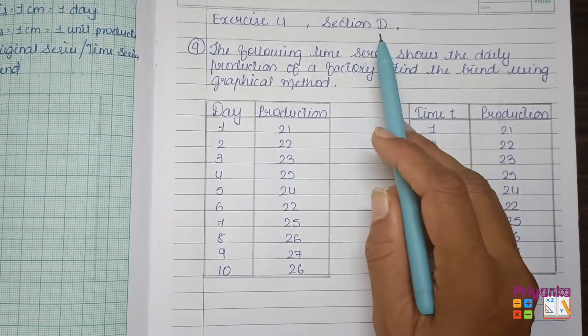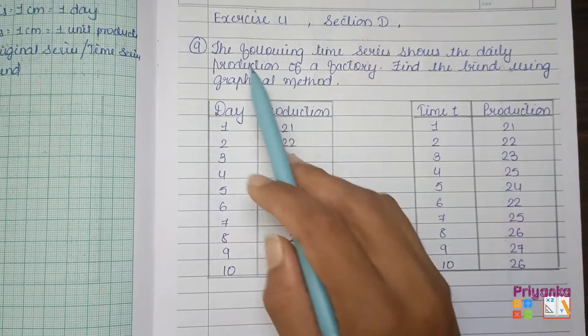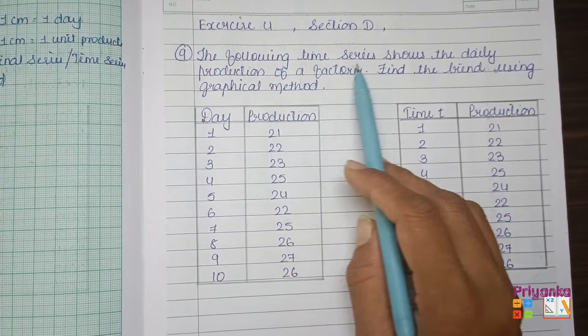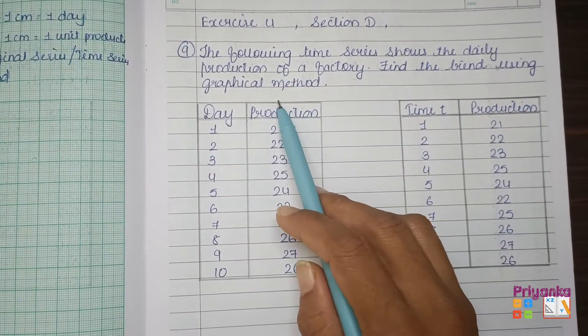In exercise 4, question starts from section D in your textbook page number 180. Question number 9: the following time series shows the daily production of a factory. Find the trend using graphical method.